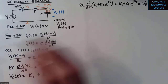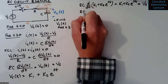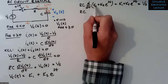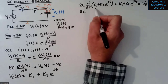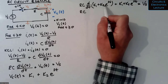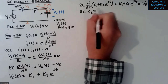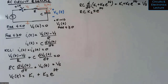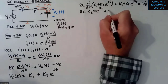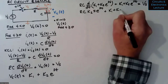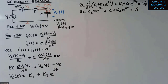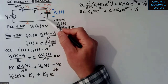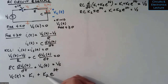Let's simplify. The derivative of K1 is zero, so K1 drops out of the derivative term. The derivative of e to the ST is S times e to the ST. So we get RC times K2 S e to the ST plus K1 plus K2 e to the ST equals V_S. Our goal is to find K1, K2, and S. This is the form of the solution plugged into the differential equation.